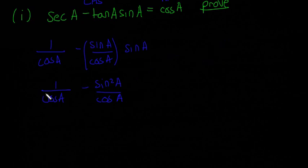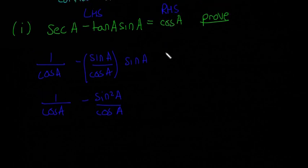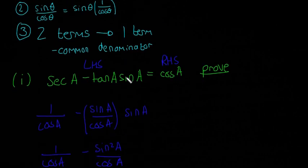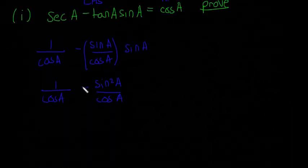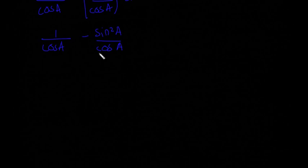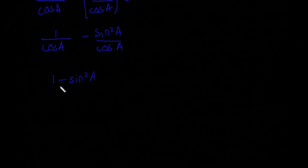Now we want to turn this expression, which has two terms, into the single term on the right-hand side. That's the rule about looking for a common denominator — we need to put it into one single fraction so it can match the right-hand side. In this case, cos(a) is already our common denominator, so we can write it as 1 minus sine squared(a), all divided by cos(a). That's just adding two fractions together.